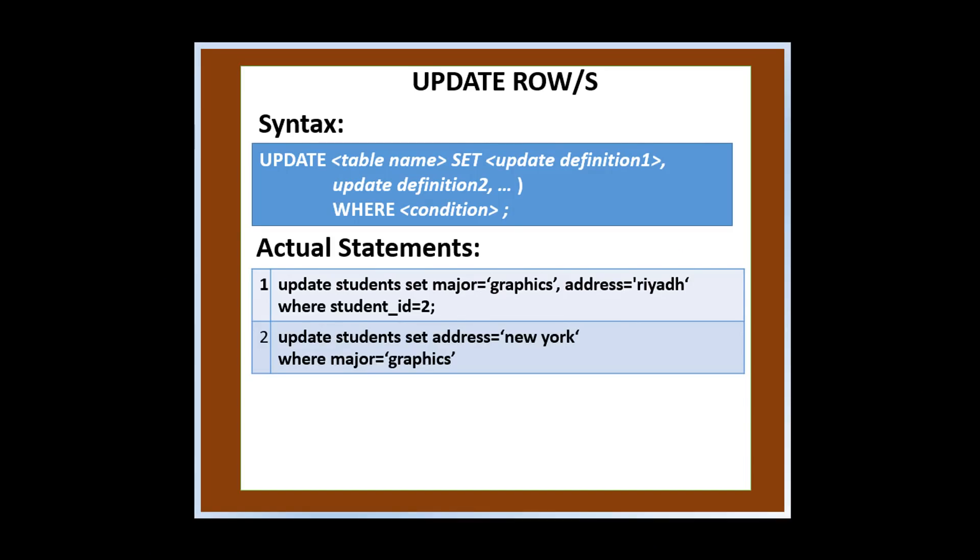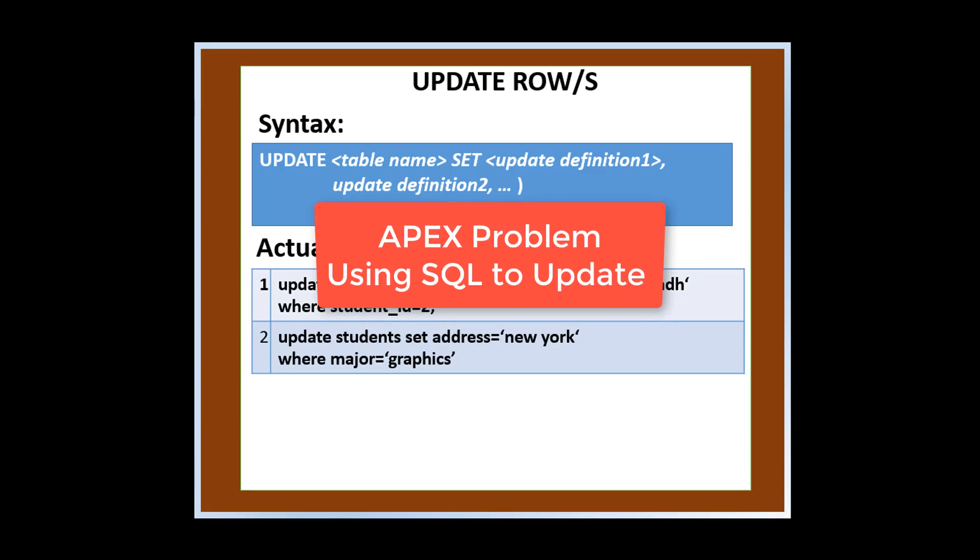Here is the syntax for updating rows. The changes that will happen should be defined after set. The rows that will be affected should be defined after where. So you may read the first statement like this. If the student ID is 2, change his major to graphics and his address to Riyadh.